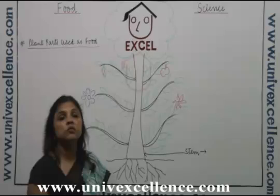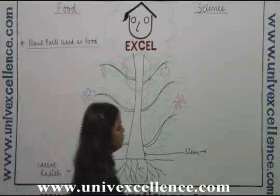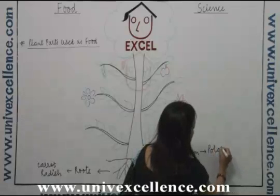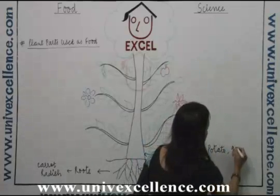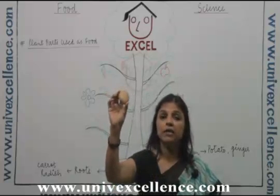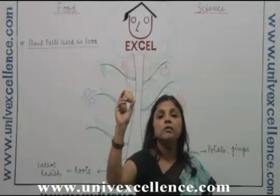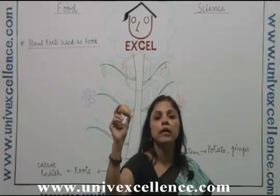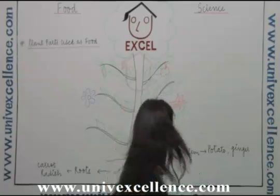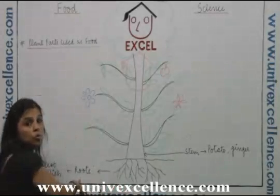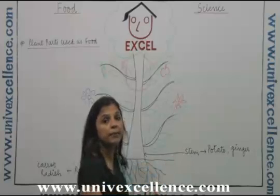Plants where we use the stem as food include potato, ginger, and sugarcane. Potato is an underground stem in which food gets stored. So in some plants we eat the root, and in some plants we eat the stem.